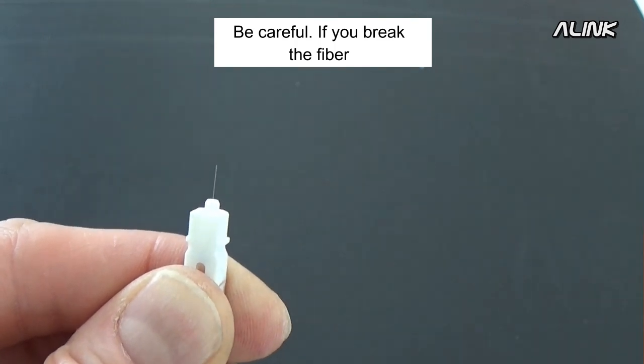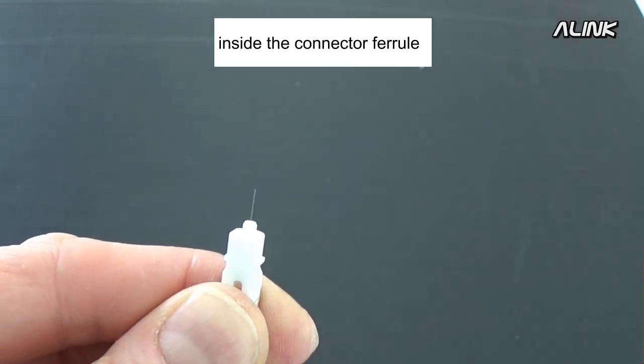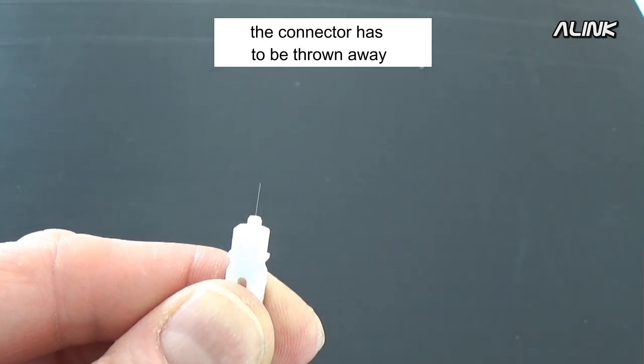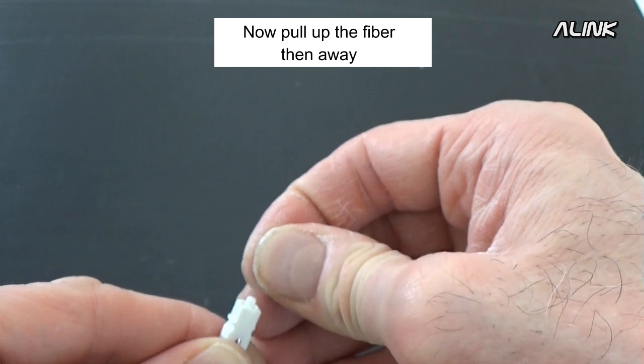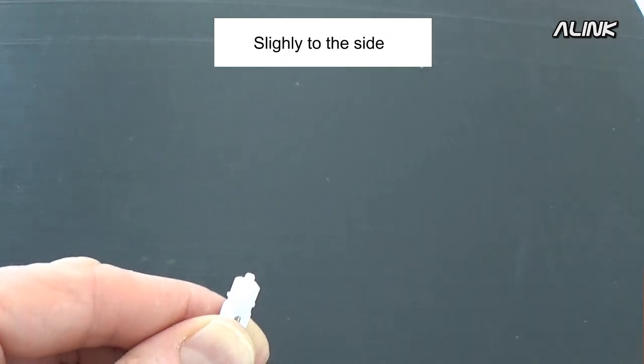Be careful. If you break the fiber inside the connector ferrule, the connector has to be thrown away. Now remove the fiber. Pull up the fiber, then away, slightly to the side.